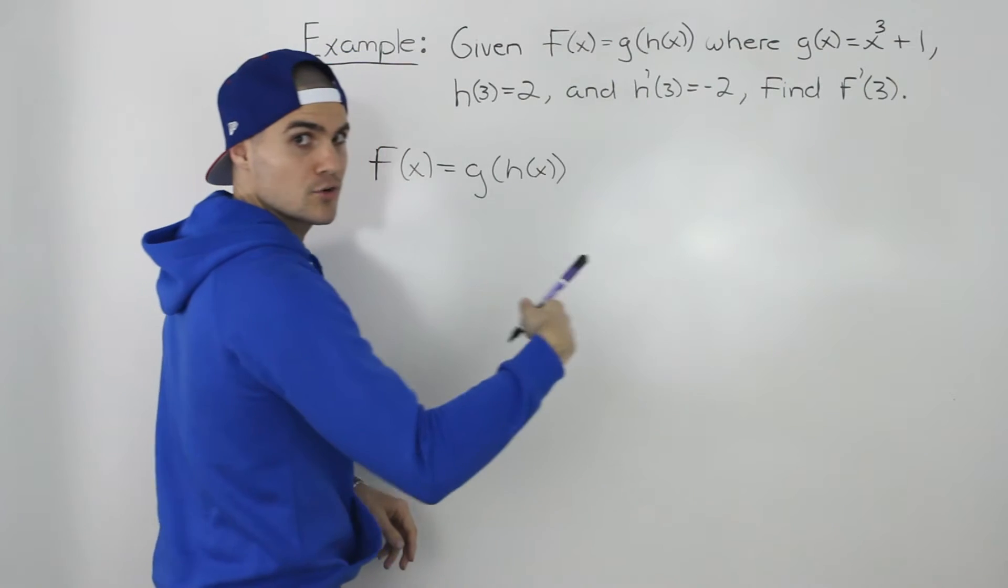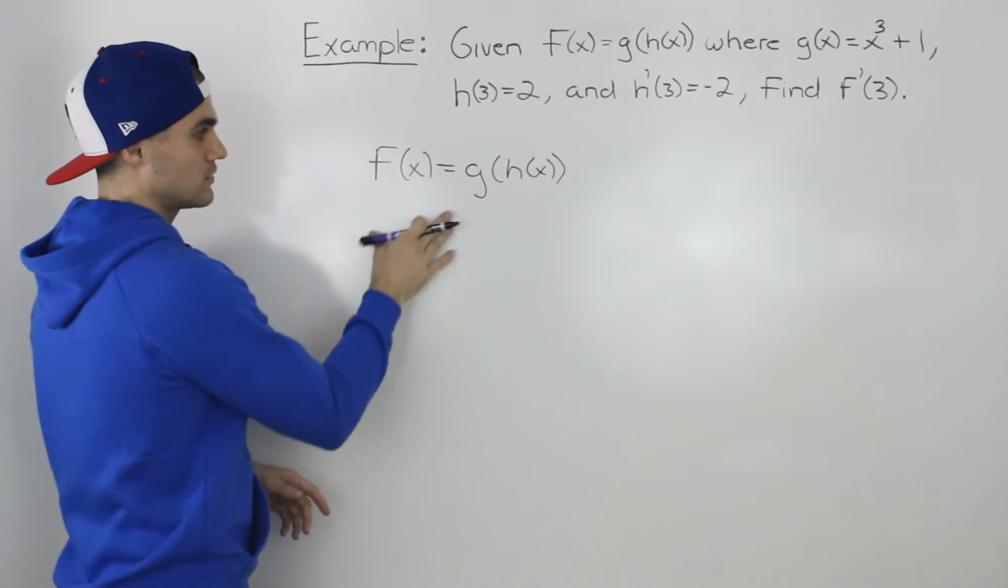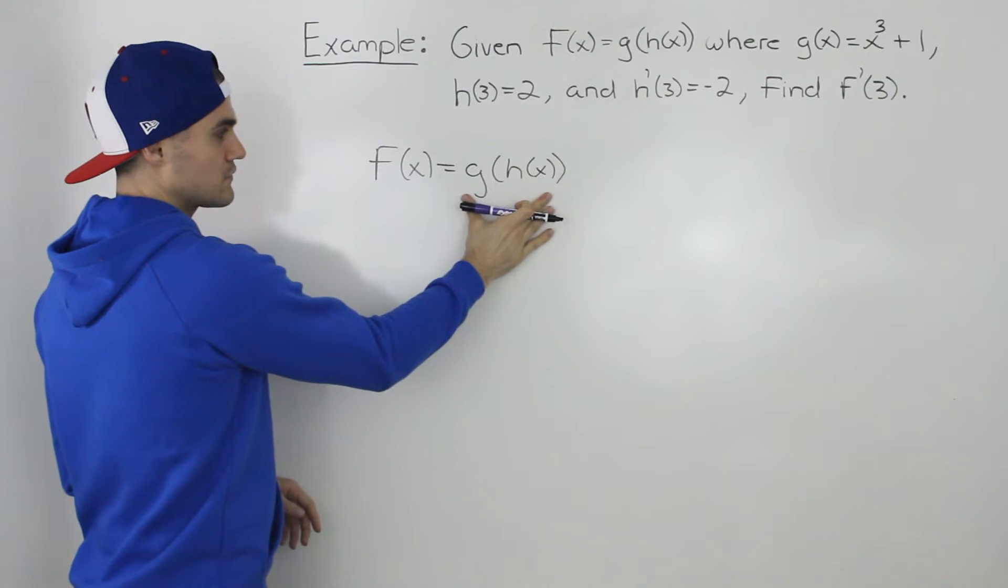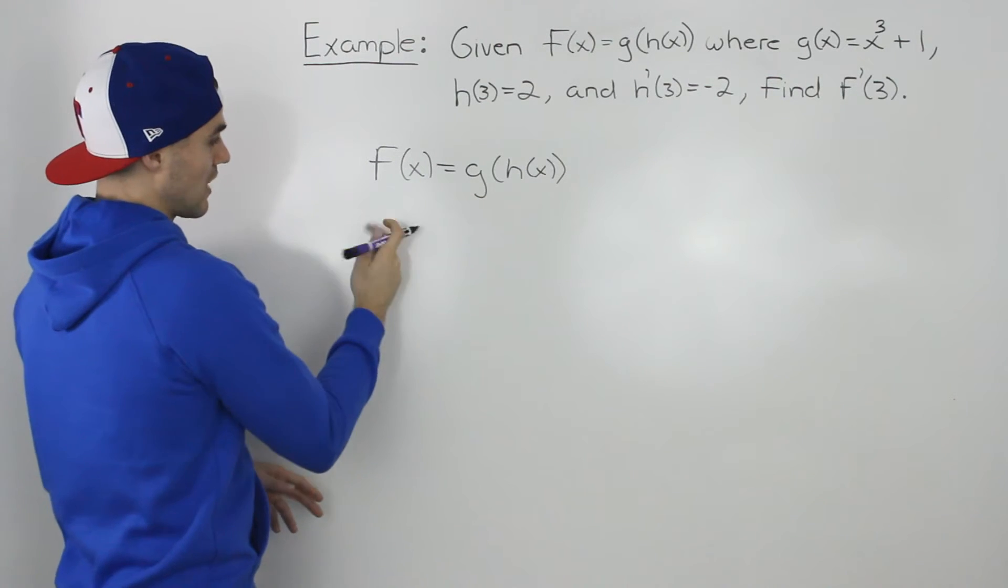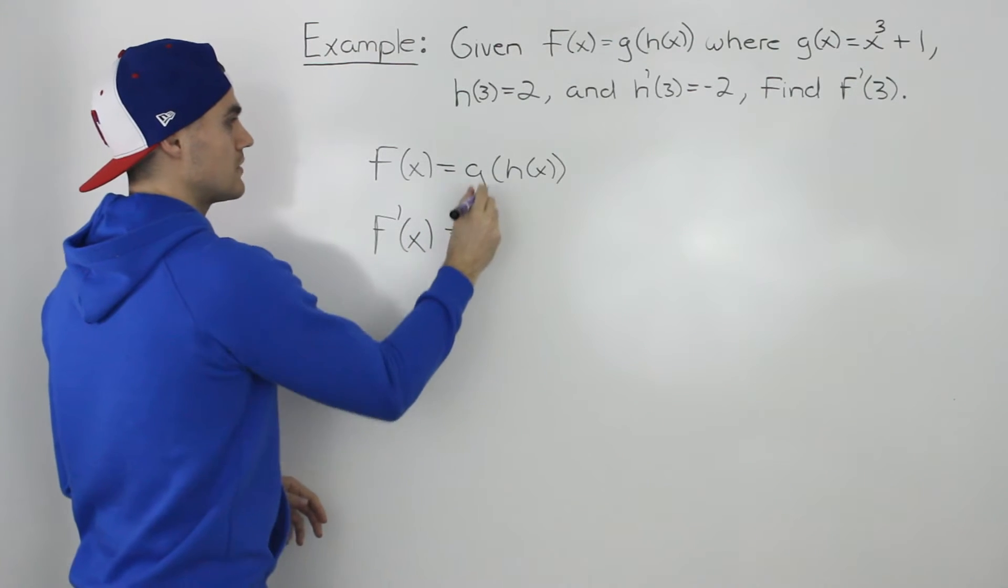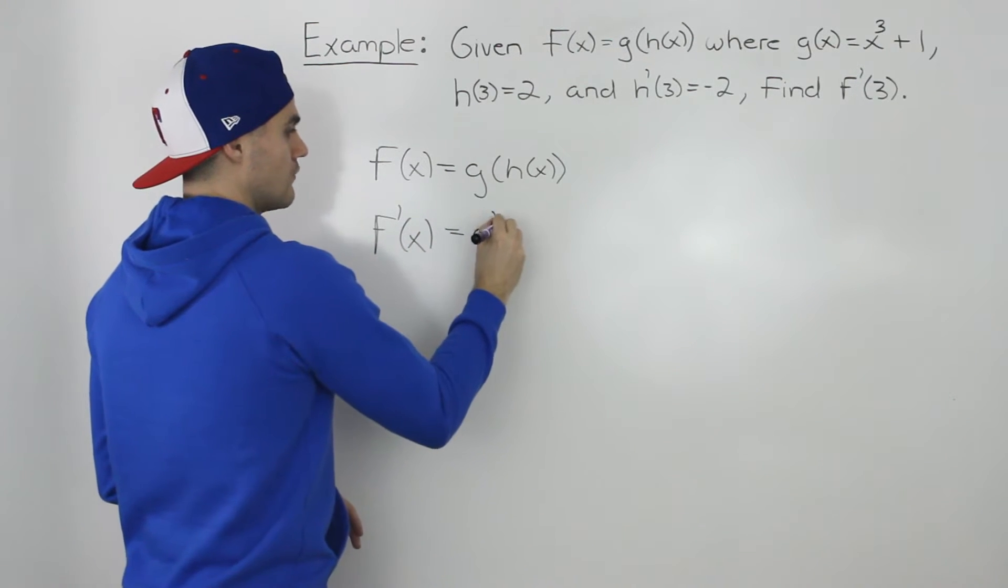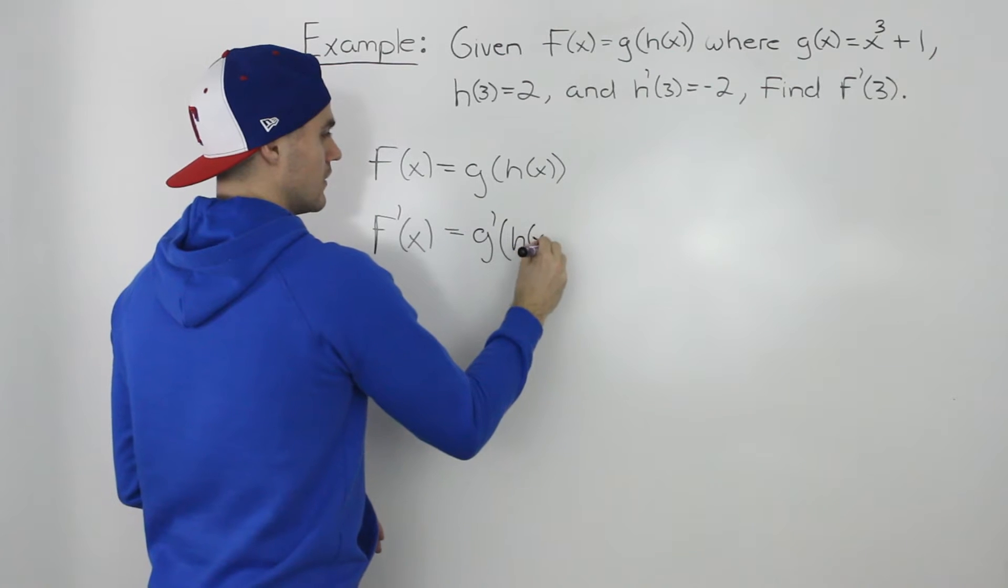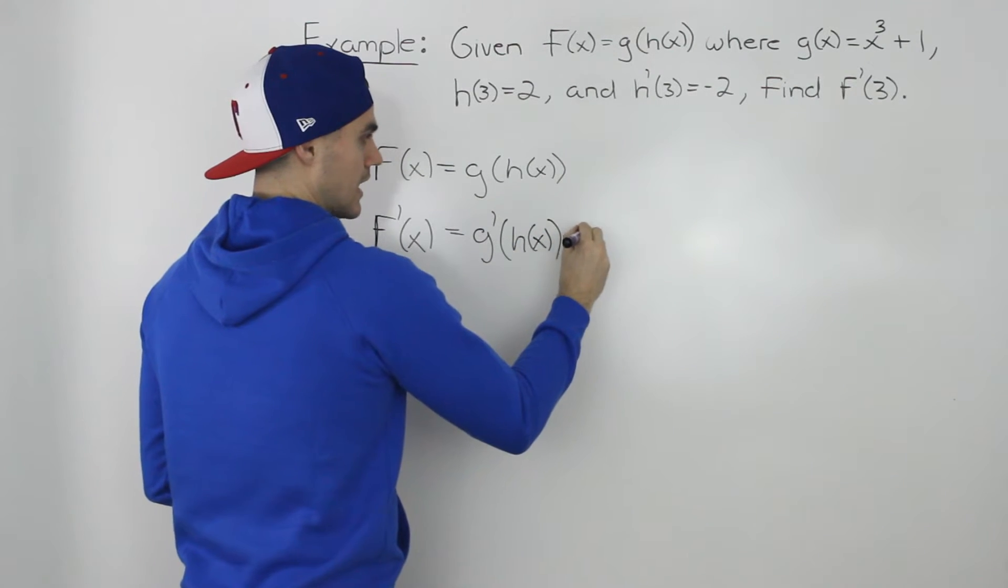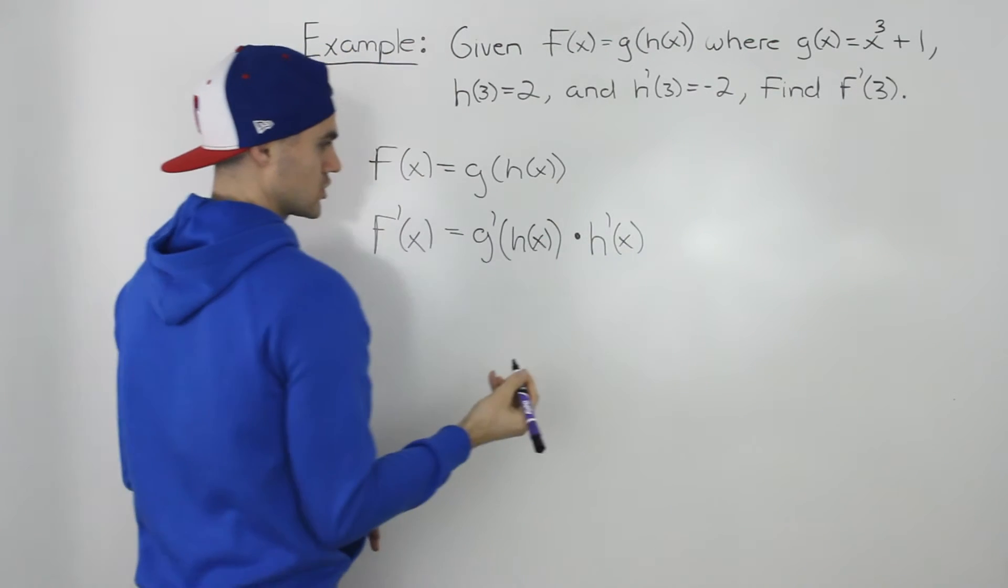Since we're going to find the derivative at a specific x value, let's find what the derivative is going to be. Because this is a composite function, the derivative of f(x) is the chain rule applied: the derivative of the outer function times the inner function left as is, times the derivative of the inner function.